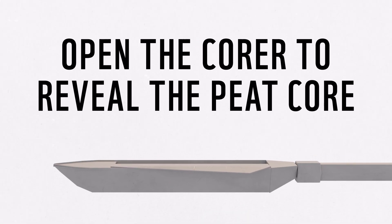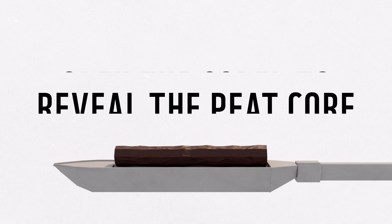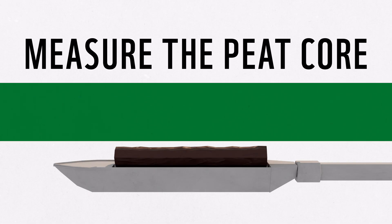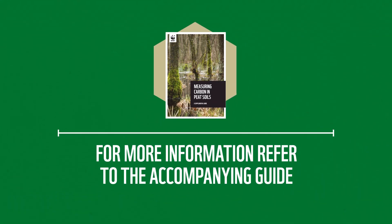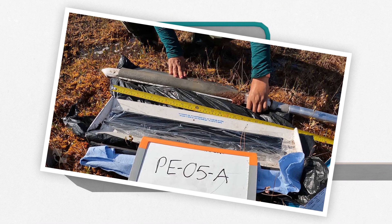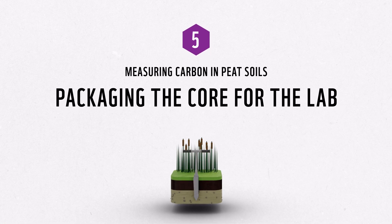Open the corer and reveal the core sample. Measure the length of the corer and make notes of any distinct changes in soil profile in your notebook — examples can be found in the accompanying guide. Mark the site and corer ID on the whiteboard and take photos of the corer from above so that the entire corer profile and the whiteboard is in frame. Once you have taken measurements, notes, and photos, you can package the corer for further lab analysis.